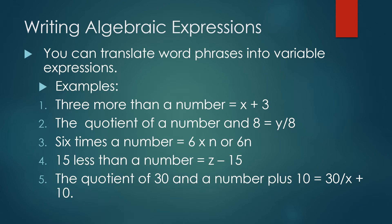The quotient of a number and 8 means the number is divided by 8. So in fraction form we can write as y upon 8. 6 times a number, 6 times is nothing but multiplication. 6 into n, here you can use any alphabet. It will be 6 into n or 6n.